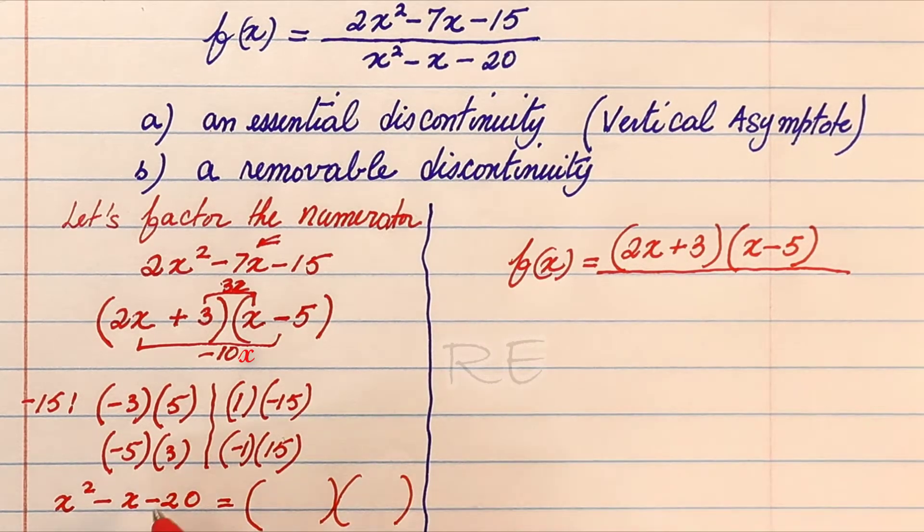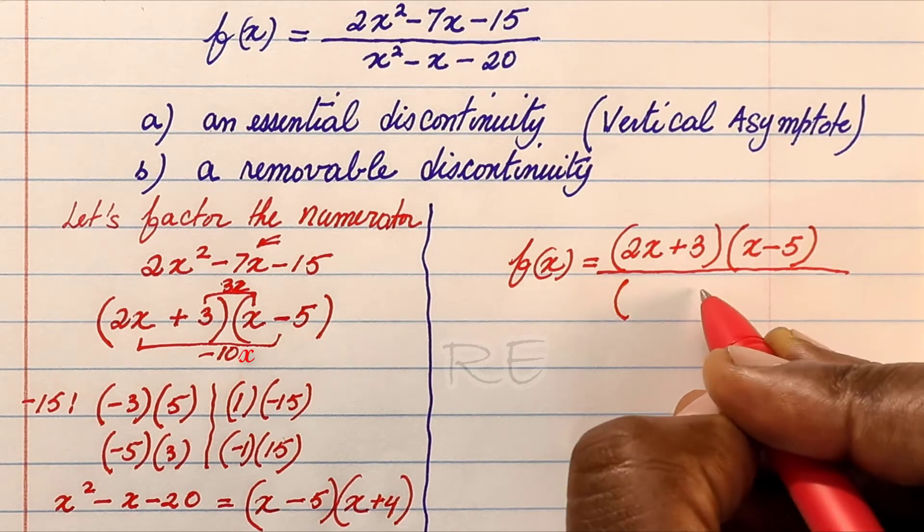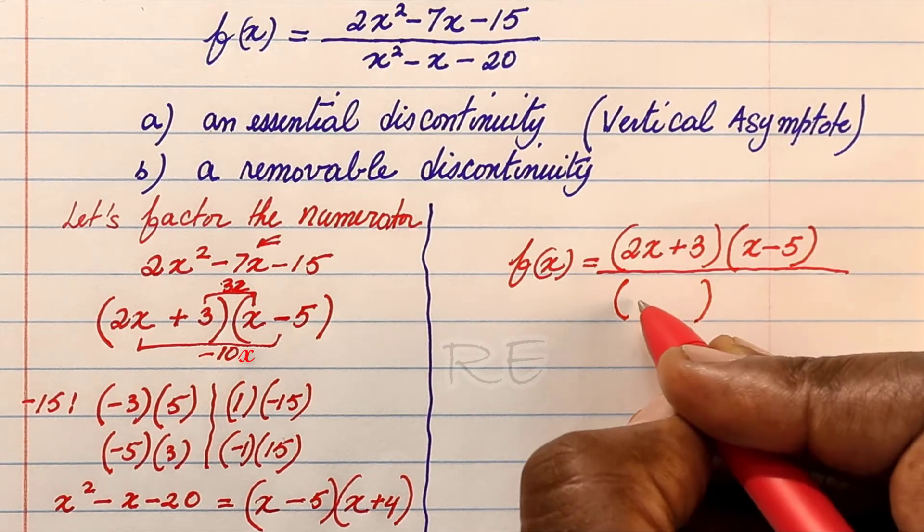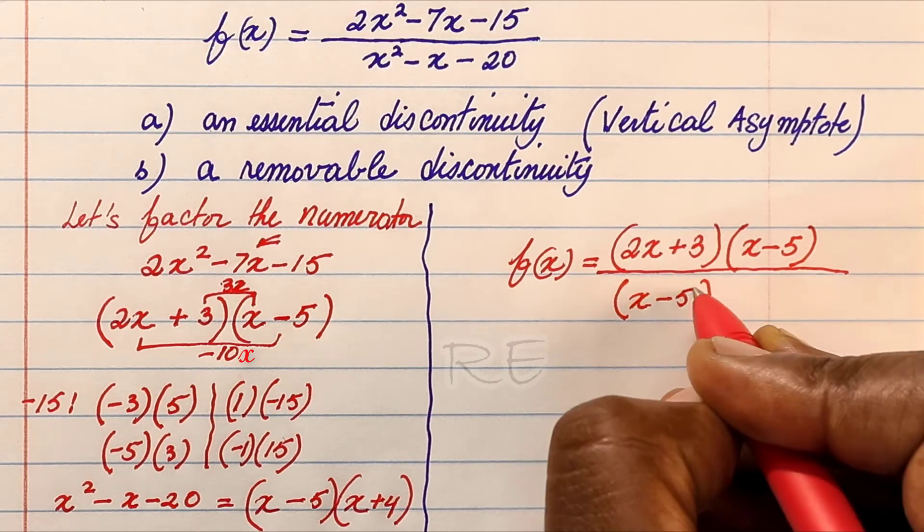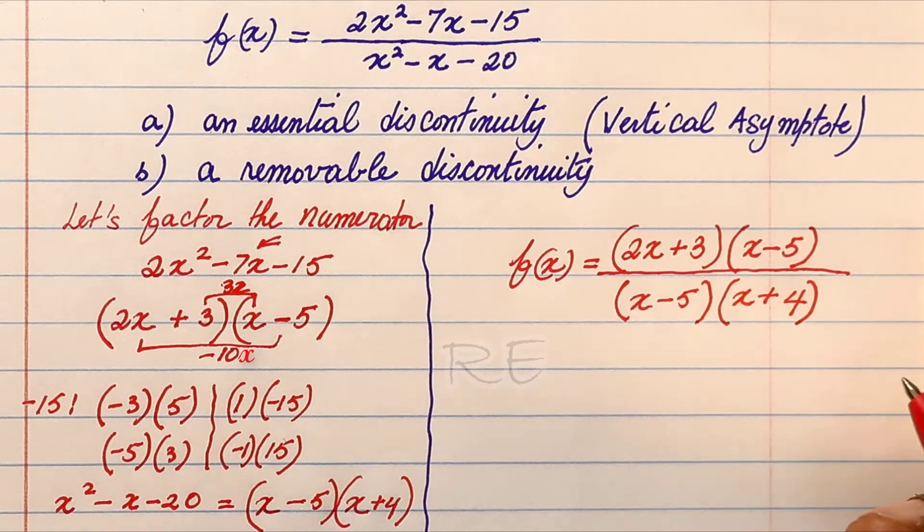The product is negative 20. The sum is negative 1. So it has to be 5 and 4: x minus 5, where 5 is negative and 4 is positive. So the two factors are x minus 5 times x plus 4.